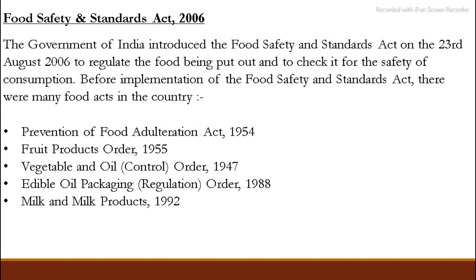Other earlier acts included the Food Product Order 1955, the Vegetable Oil Control Order 1947, the Edible Oil Packaging Regulation Order 1988, and the Milk and Milk Products Order 1992. There were many different acts that were introduced before the Food Safety and Standards Act.